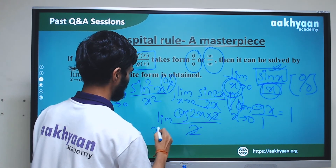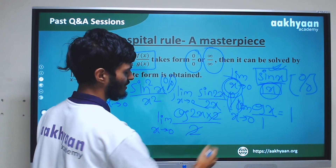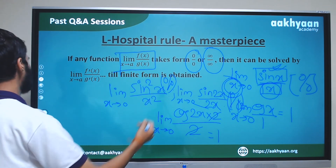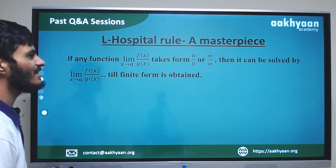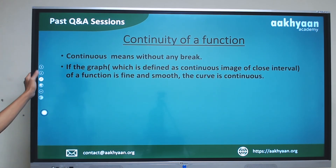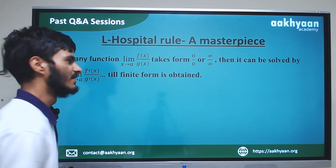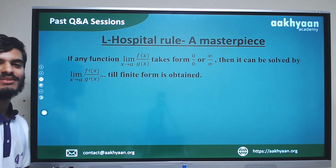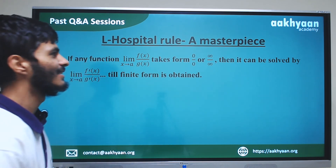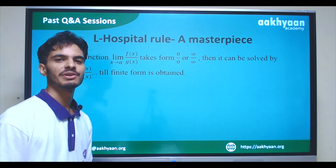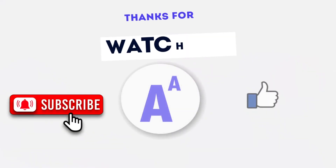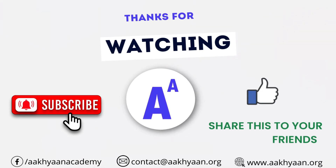So, limit x tends to 0 of cos 2x: substituting x = 0 gives cos 0, which equals 1. So we have solved it. In the next class, we will solve more problems. Thank you. We'll see you next time.